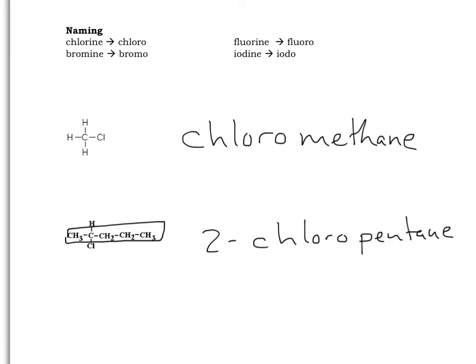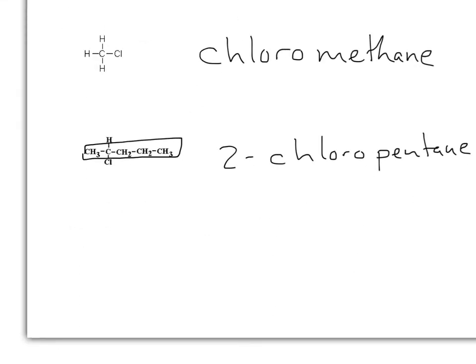You've got chloro, bromo, fluoro. My personal favorite, iodo. Also, please remember that the halogens come first in the name, regardless of alkyl groups or other substituents.